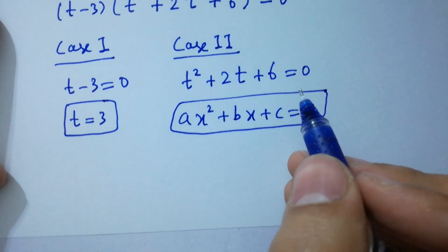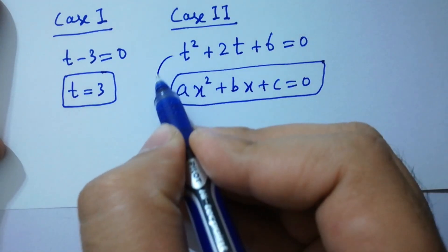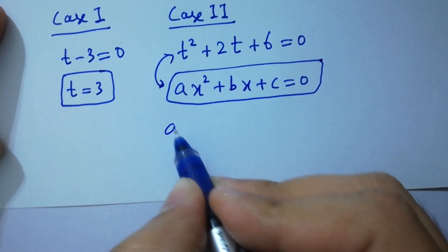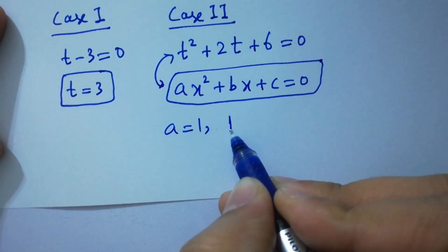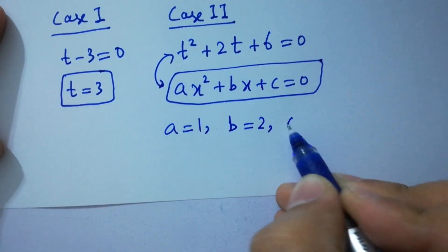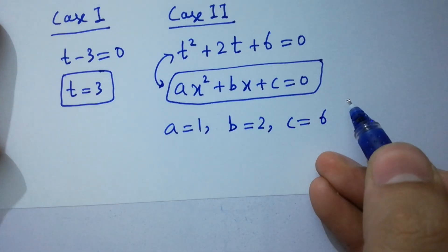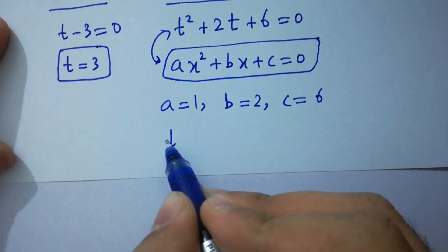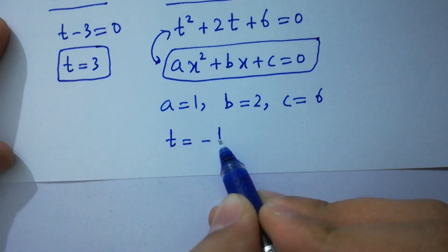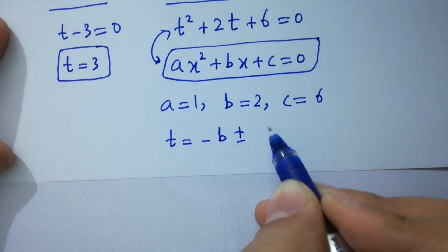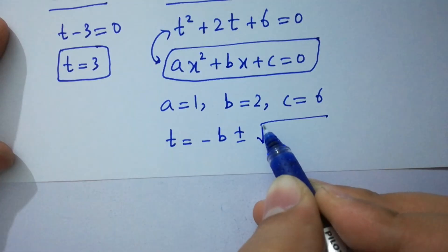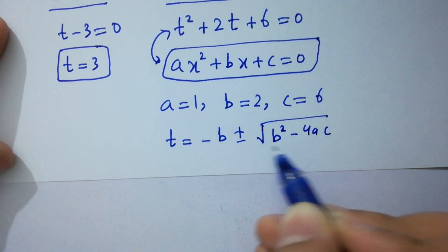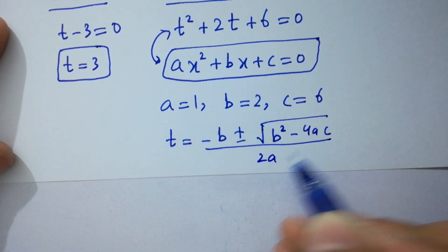By comparing, we have a equal to 1, b equal to 2, and c equal to 6. Applying the quadratic formula: t equals minus b plus or minus square root of (b squared minus 4ac), over 2a.